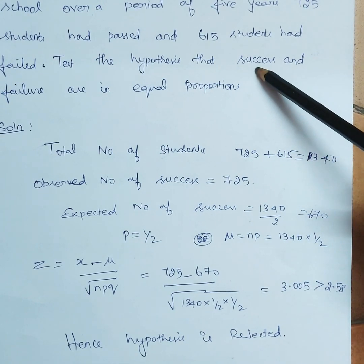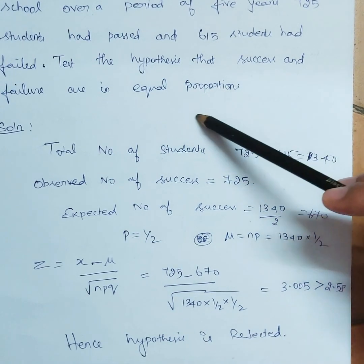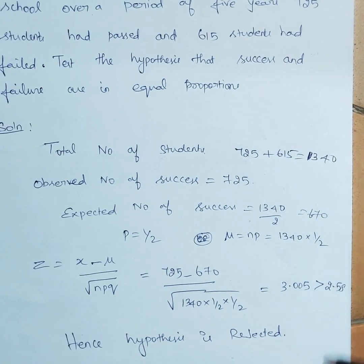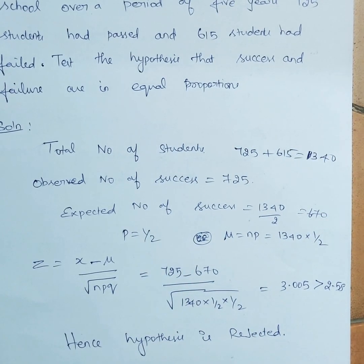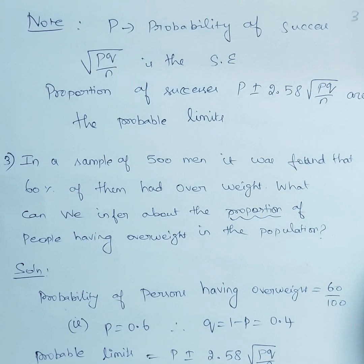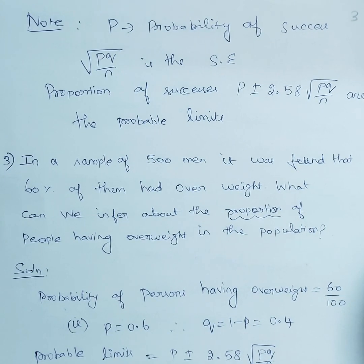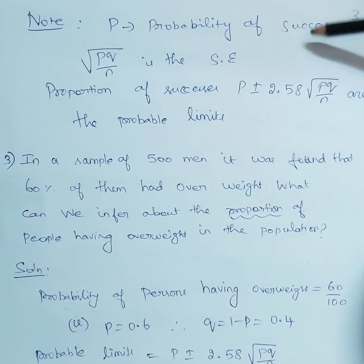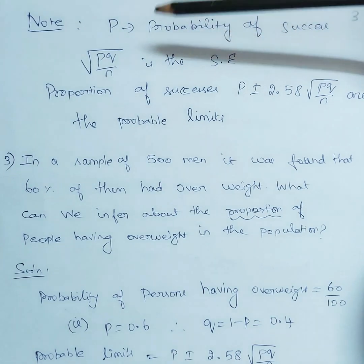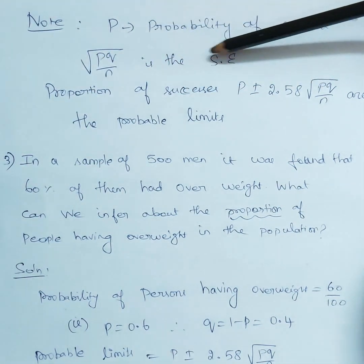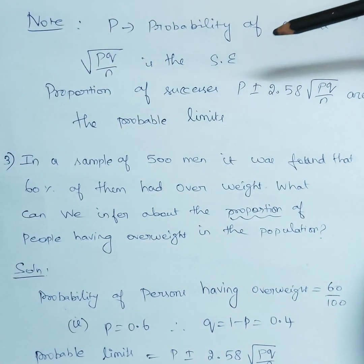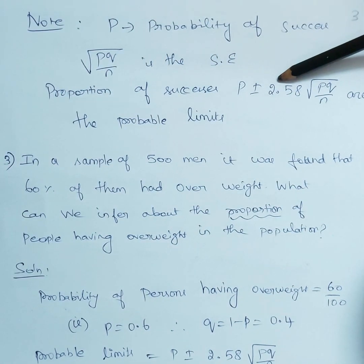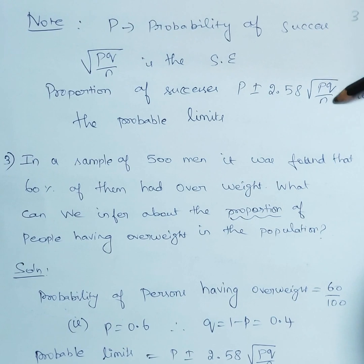Our hypothesis was that success and failure are in equal proportion, and based on this solution we are rejecting that hypothesis. Now, before the next example, note that root(pq/n) is the standard error of proportion of success. We write the probable limits as p plus or minus 2.58 times root(pq/n).